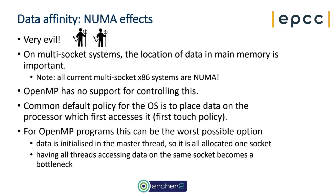Andrew asks: can private variables be used more often to better control communications? The answer is yes — private variables can only be accessed by their owning thread, so they won't be communicated. But that's subject to whether you can make correct code, and in most cases you probably can't. Making temporary copies into private variables might help in some cases, though you also have to worry about the cost of making copies and the extra memory used. The answer is maybe, but it's not a very commonly used tactic.